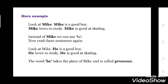Here are a few more examples. Look at Mike. Mike is a good boy. Mike loves to study. Mike is good at skating — here we have used Mike many times. So instead of Mike we can use he. Now read these sentences again: look at Mike, he is a good boy, he loves to study, he is good at skating. The sentence is more natural in speaking. The word he takes the place of Mike and it is called a pronoun.